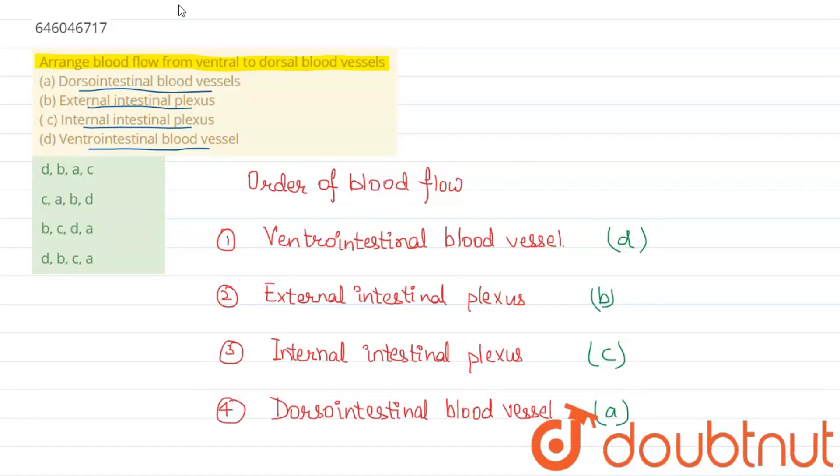Hence, we have the final answer as, among the following options, the arrangement of blood flow from ventral to dorsal blood vessel is D, B, C, A.